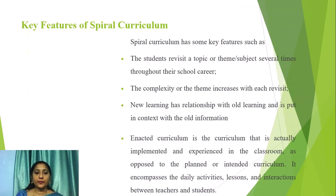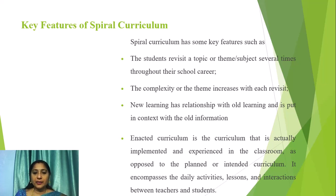The key features of spiral curriculum: the student revisits a topic or theme several times throughout their school career. The complexity of the theme increases with each revisit. New learning has a relationship with old learning and is put in context with old information. The enacted curriculum is the curriculum that is actually implemented and experienced in the classroom, as opposed to the planned or intended curriculum. It encompasses the daily activities, lessons and interactions between teachers and students.